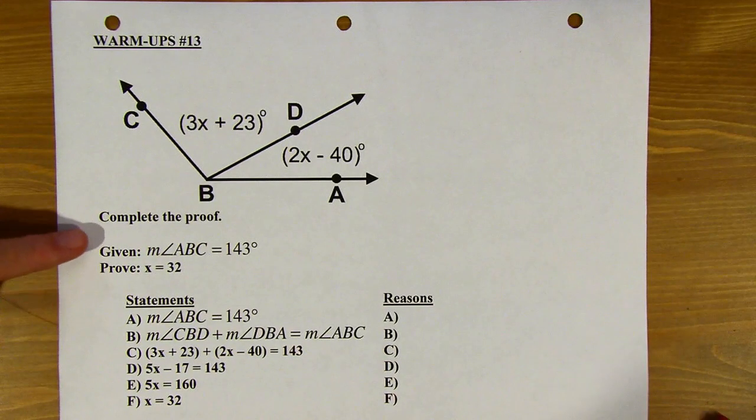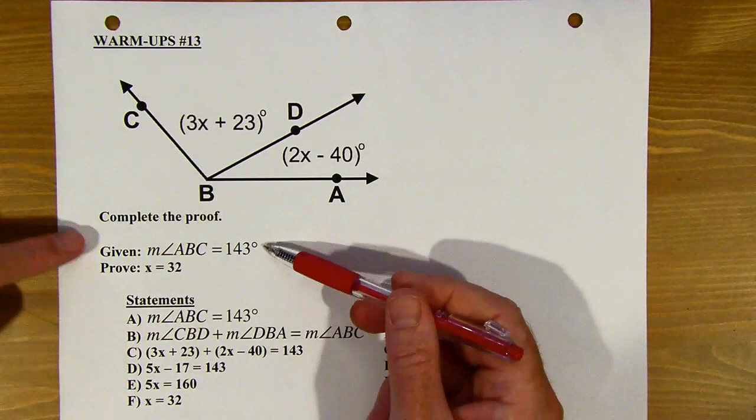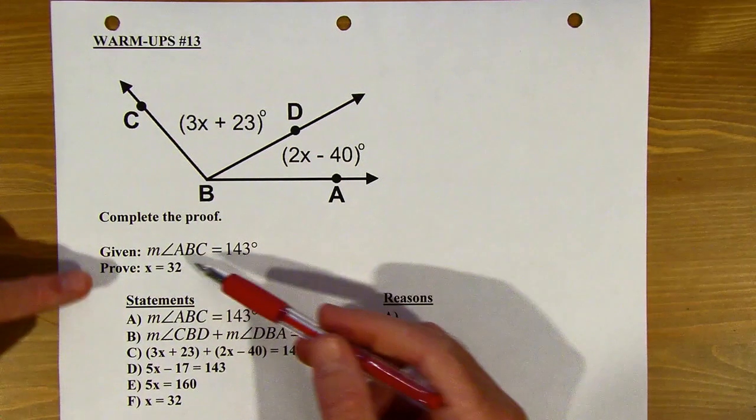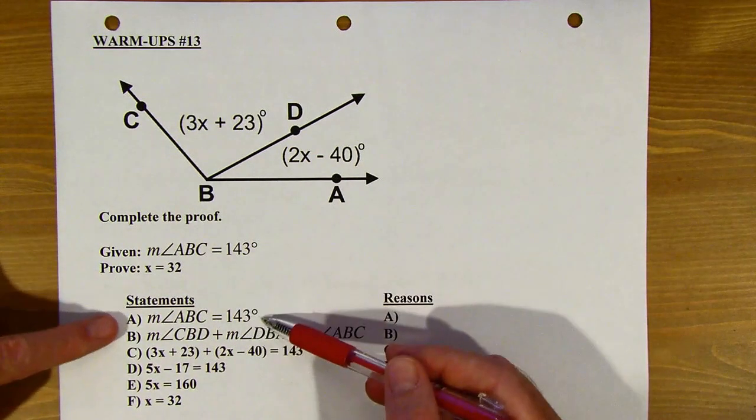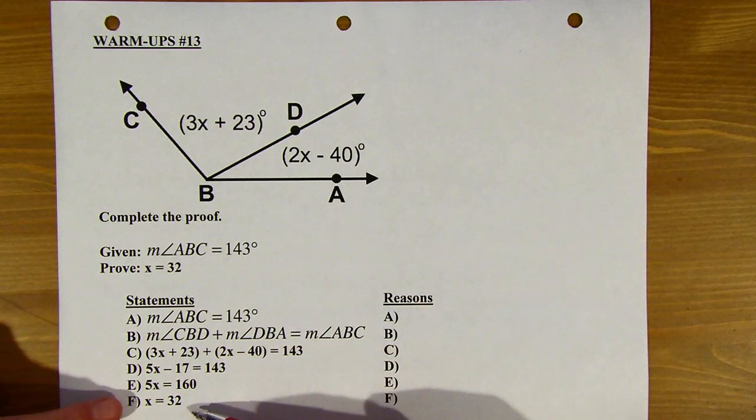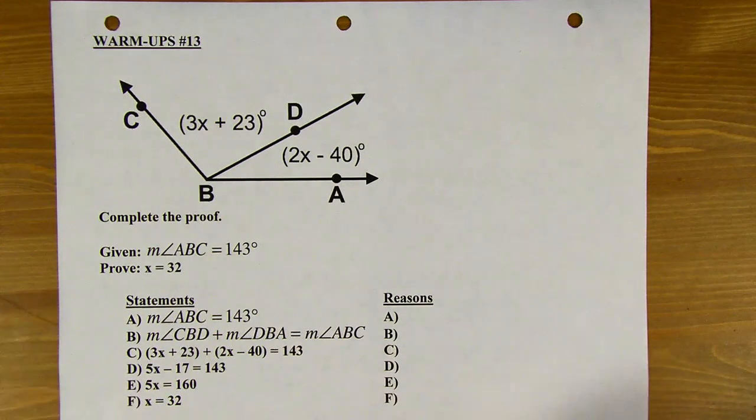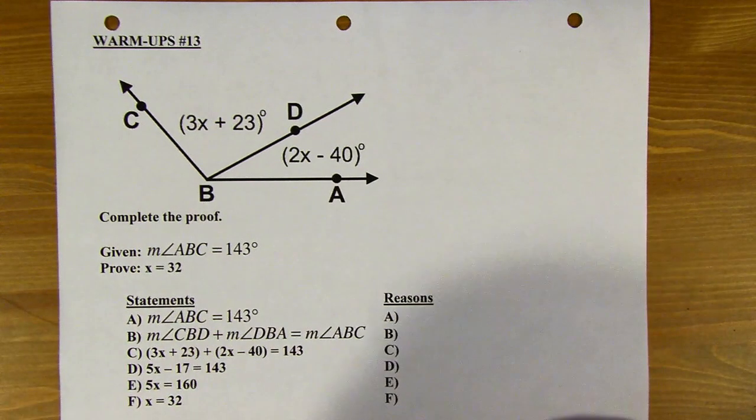Okay, so these proofs are always going to start with the given info, which is right there, right? And they'll end with what you're trying to prove. So this is getting from this to x equals 32. So someone's thought through the steps. We just have to figure out what they were thinking step by step.